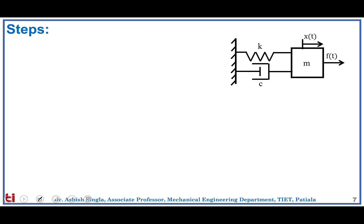To develop the equation of motion of this single degree of freedom system we need to follow some steps. The first step is the free body diagram, where we isolate the body and show all forces acting on it. The body is under external force F(t) applied to the right. The spring K is stretched and applies a backward force Kx to the left. The damper applies a force Cx-dot to the left to oppose velocity. This completes the free body diagram.